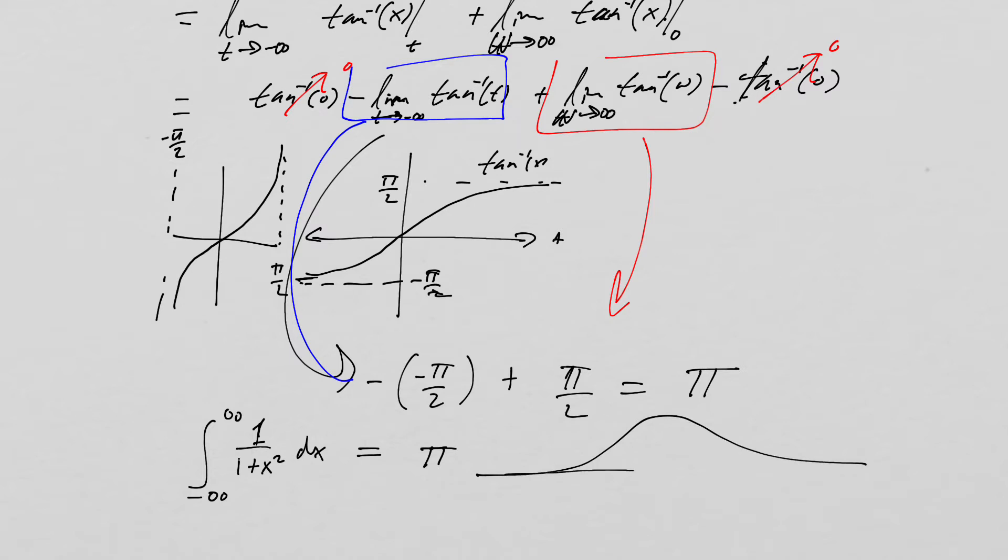So this beautiful bell-shaped curve that we've learned so much about in this class, incidentally, has an area of pi. I think that's pretty cool. Okay, so that's a nice calculation to do, just a little example calculation.